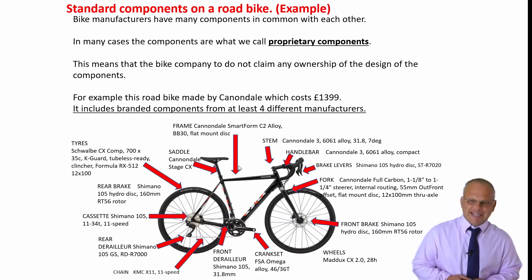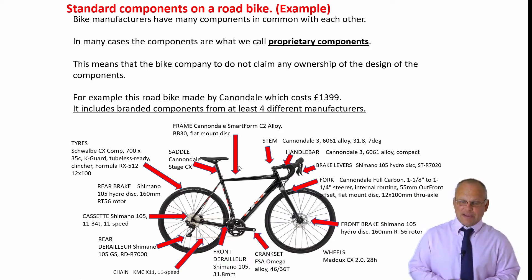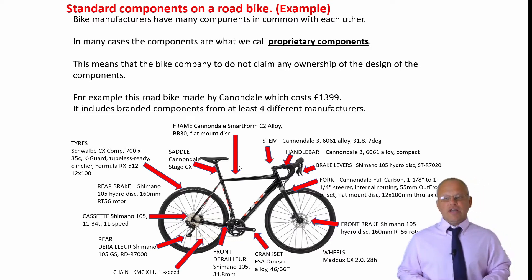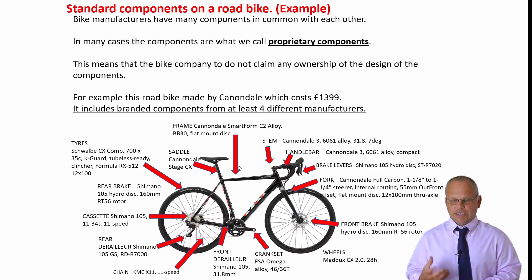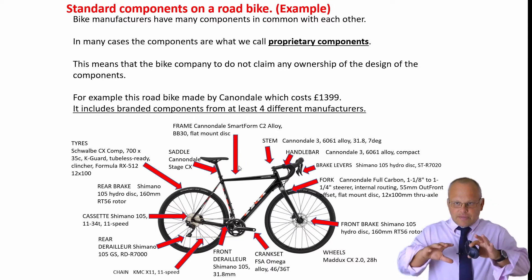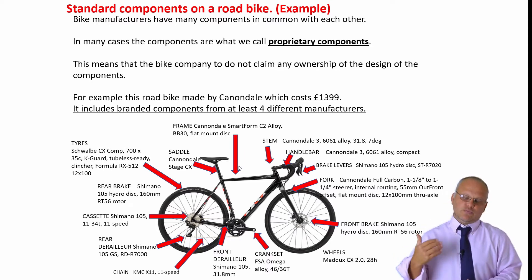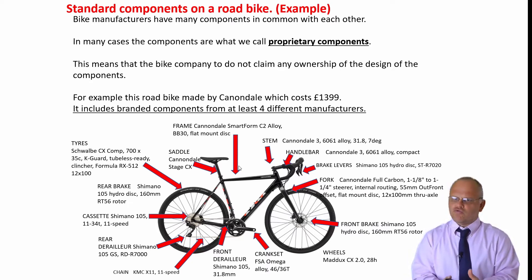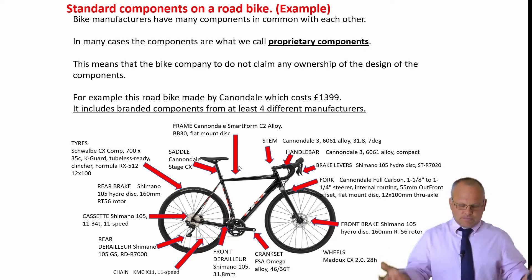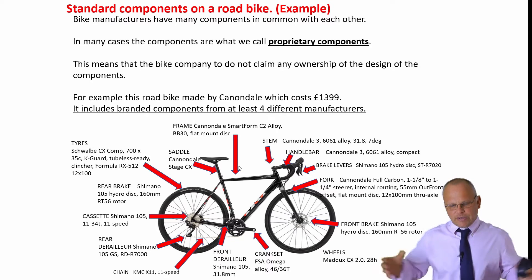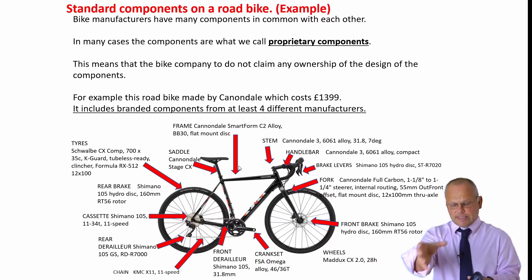Another example is a Cannondale bike at £1,399 — a mid-range bike. What I noticed is there are at least four different standard component suppliers on it. Not only are they standard components, they are also what's known as proprietary components — where a specialist company makes them, holds the patents, and holds the intellectual property rights, ensuring those components are of a very high standard.